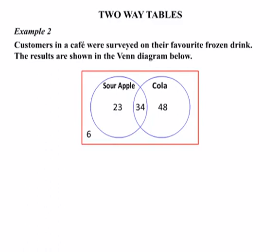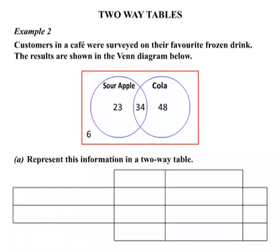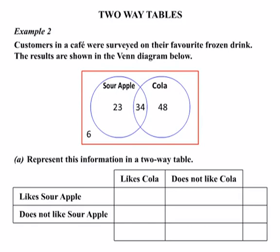Now let's look at a second example. Customers in a cafe were surveyed on their favourite frozen drink, and the results are shown in a Venn diagram. We're asked to represent this information in a two-way table. We draw a blank table with headings for Cola and 'not Cola' as columns, and Sour Apple and 'not Sour Apple' as rows.